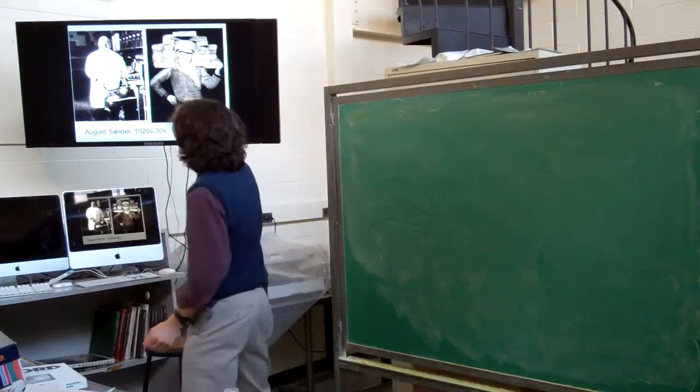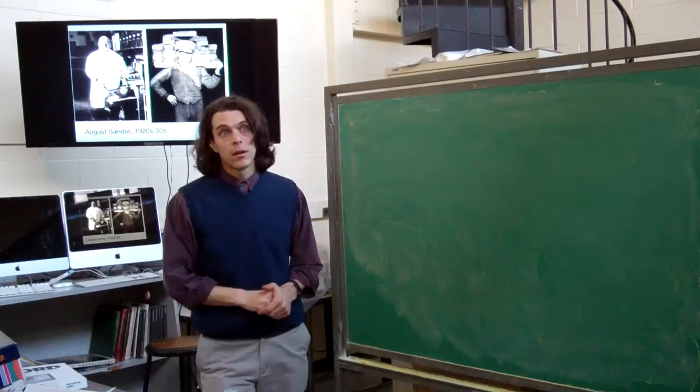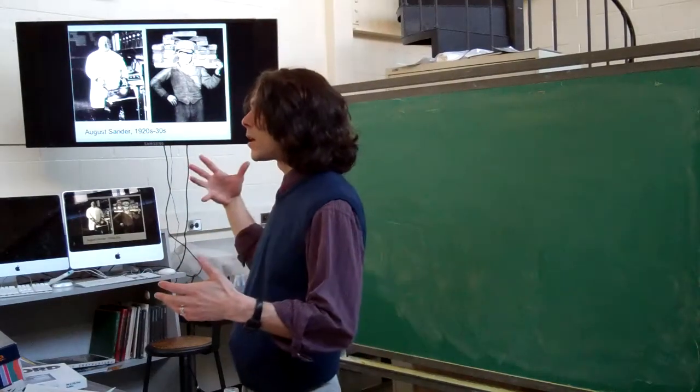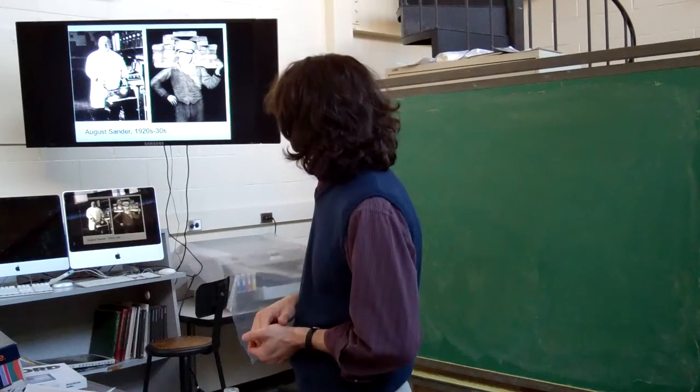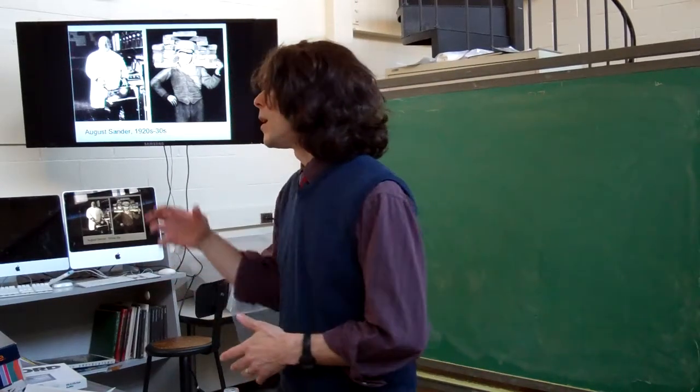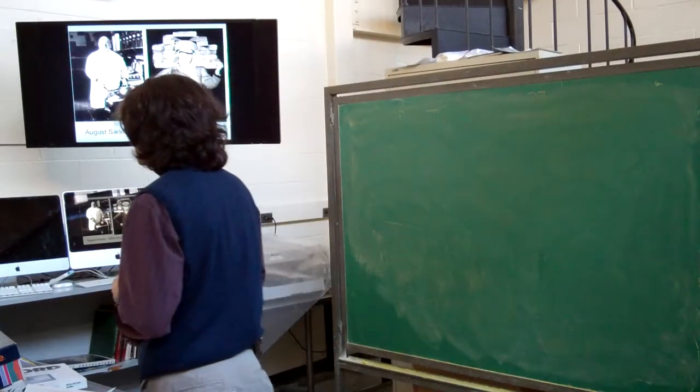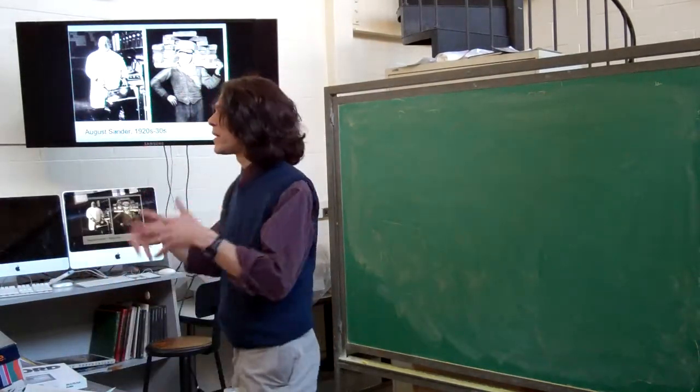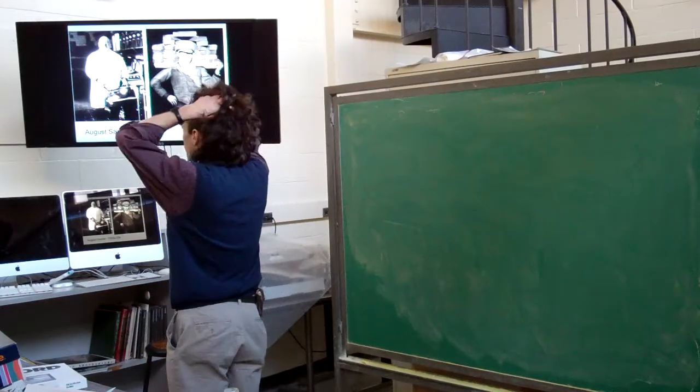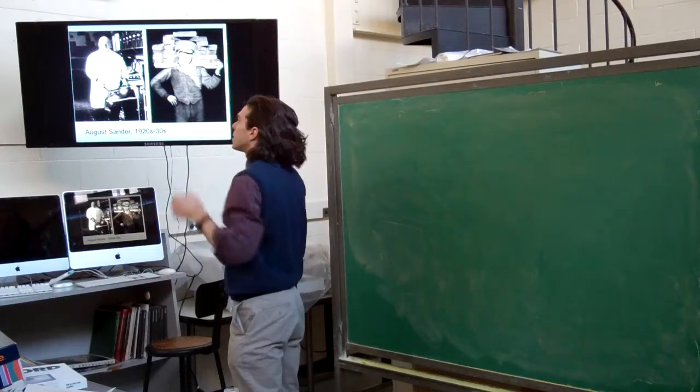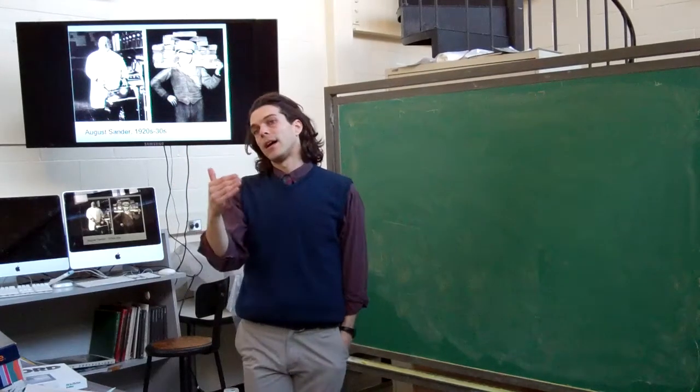So back in Europe, about the same time, we have this guy, August Sander. August Sander, very much looking at that portraiture of Brady or Nadar, and thinks to himself, this is Germany, between the wars, between World War I and World War II. In Germany, it was a flourishing place at that point, very diverse, very intellectually. It was the intellectual center of the world.